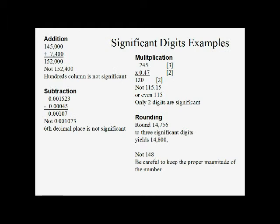Addition example: 145,000 plus 7,400. The hundreds column is significant in the second number but not the first, so we are not able to keep it in our answer. The answer is not 152,400 — it will be 152,000. For subtraction: 0.001523 (six decimal places) minus 0.00045 (five decimal places). The sixth decimal place is only significant in the first number, so we are only allowed to keep five decimal places in our answer. Instead of 0.001073, we truncate and are left with 0.00107.